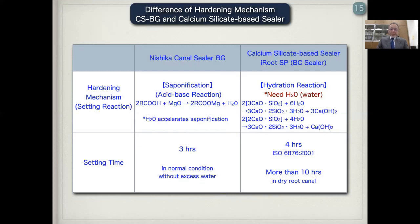The setting time of Nishika-Kina-Cela-BG is almost three hours. On the other hand, the setting time of calcium silicate-based sealer is almost four hours, and if you use this sealer in a dry root canal, it needs more than 10 hours.